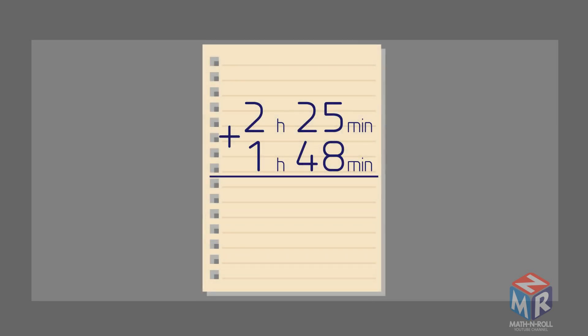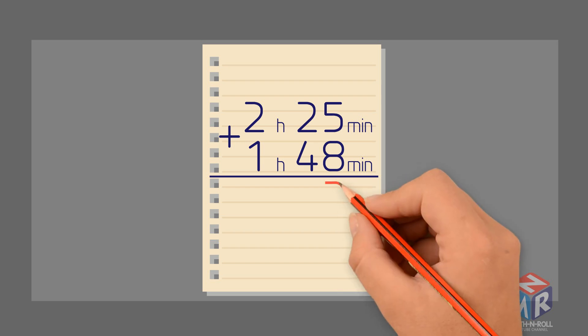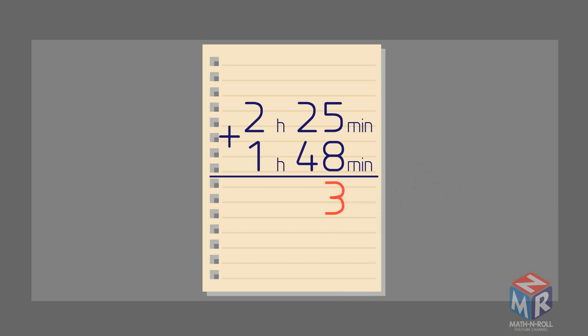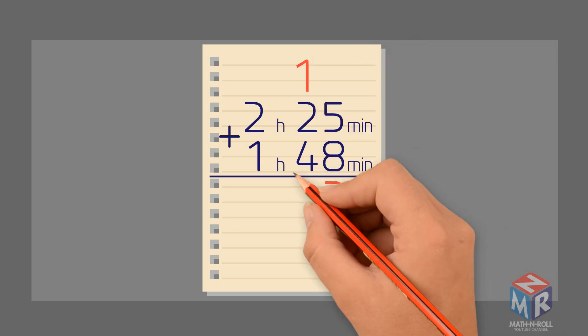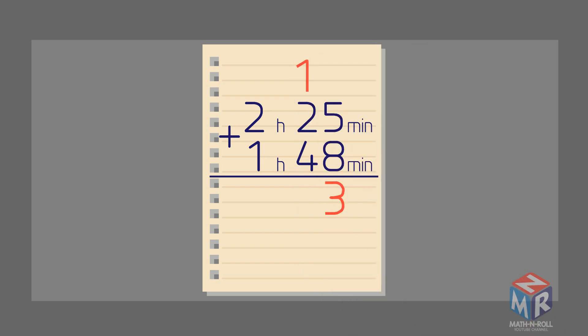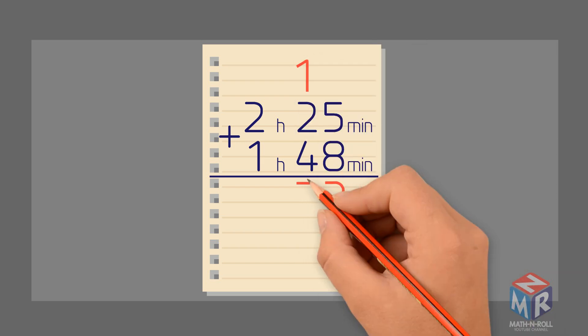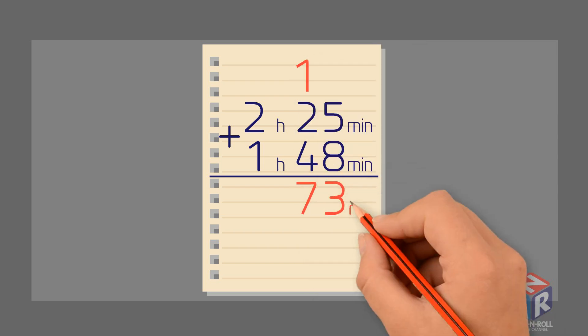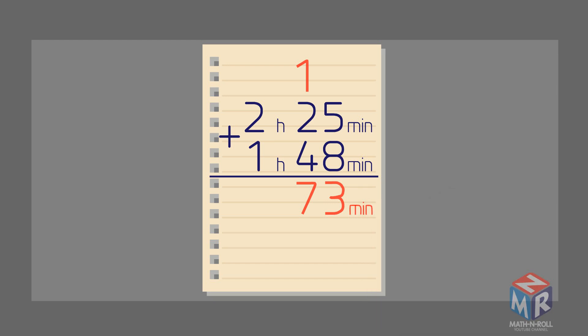Let's try another example. 5 plus 8 equals 13. So we need to write the 3, carry over the 1, and then we need to add 1 plus 2 plus 4, which equals 7. So we have 73 minutes.